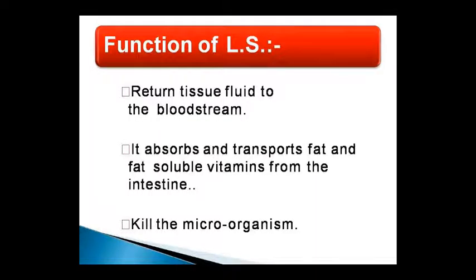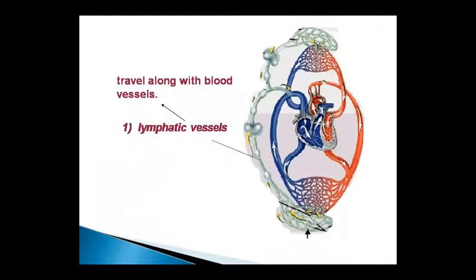The lymphatic system functions to send tissue fluid back to the bloodstream, to absorb and transport fat and fat-soluble vitamins from the intestine, and to kill microorganisms. These are its three main functions: returning tissue fluid to the bloodstream, absorbing fat and fat-soluble vitamins from the intestine for transport, and killing microorganisms. It travels alongside blood vessels — as you can see in the diagram, the lymph vessels in green travel alongside the blood vessels shown in red and blue — forming a combined vascular system.